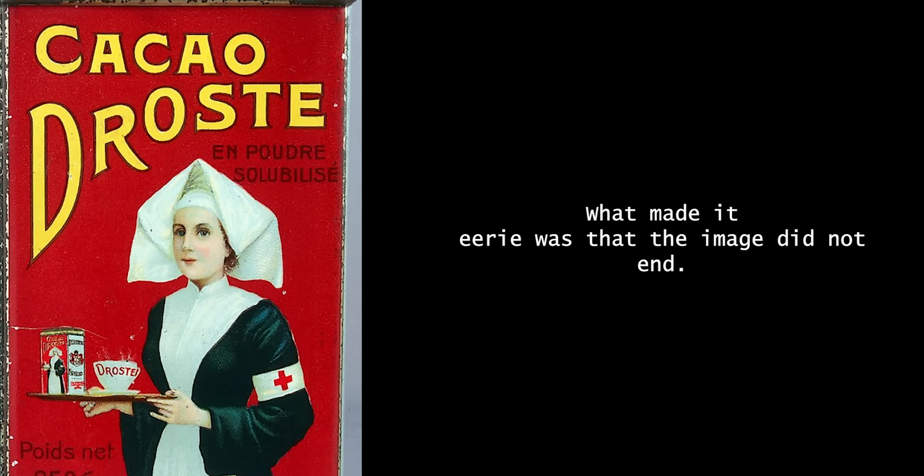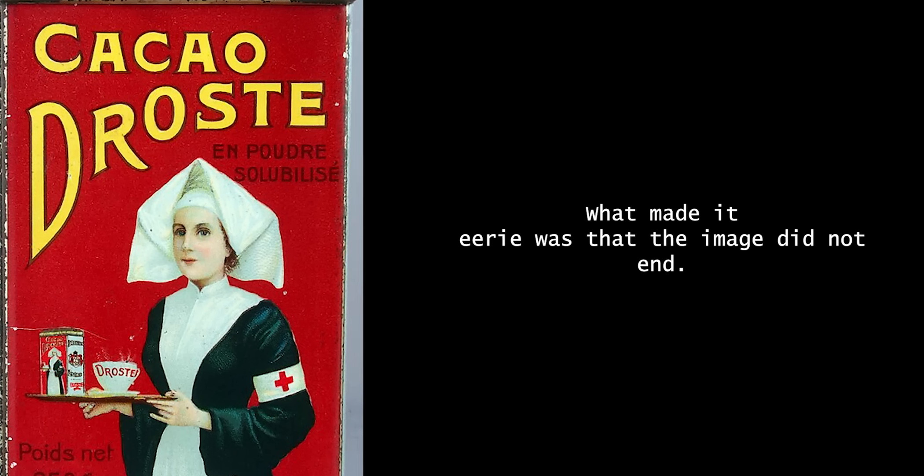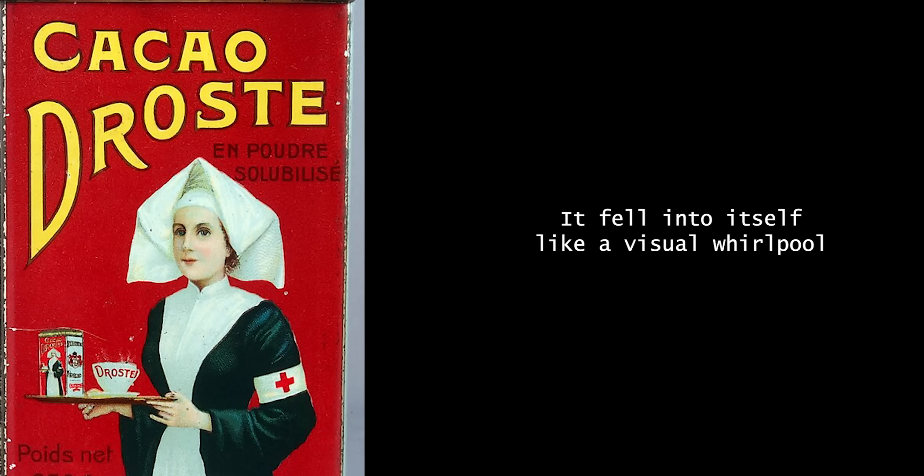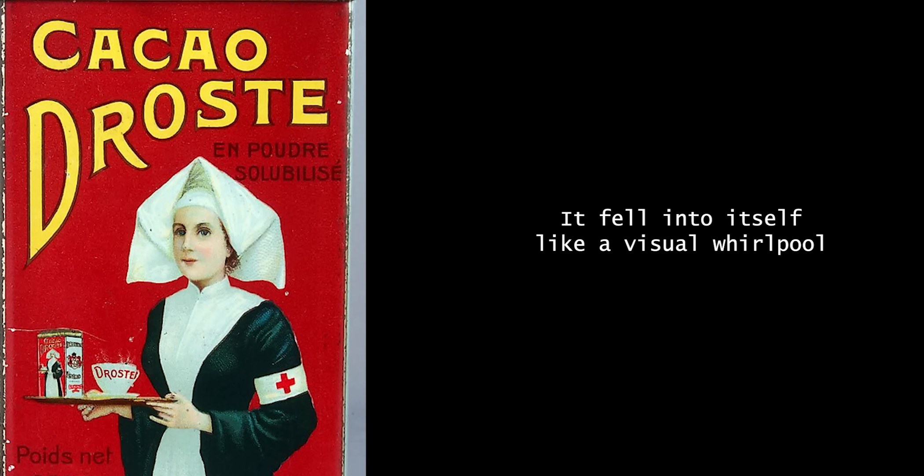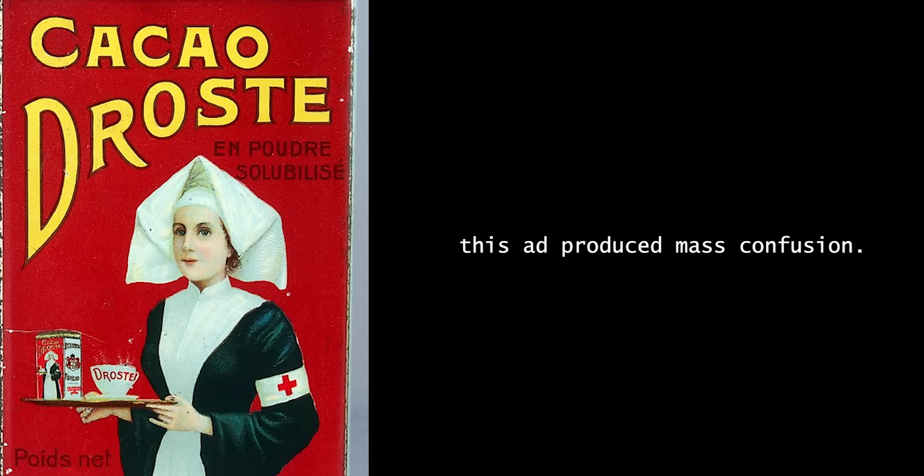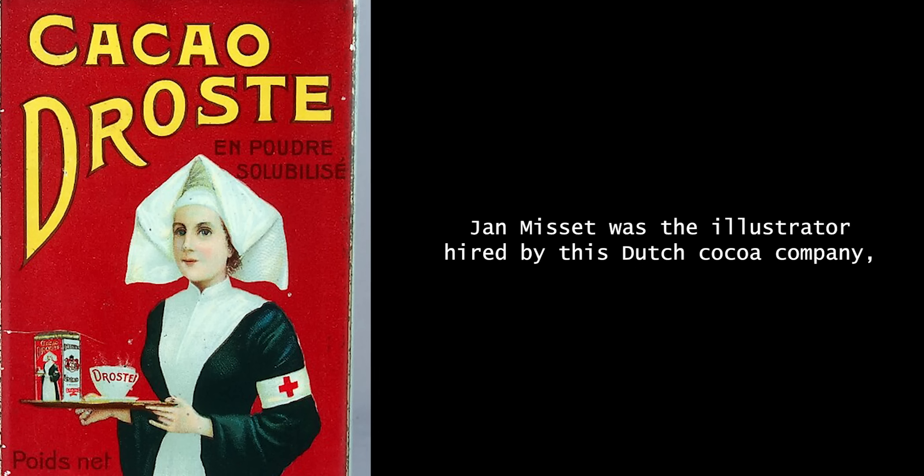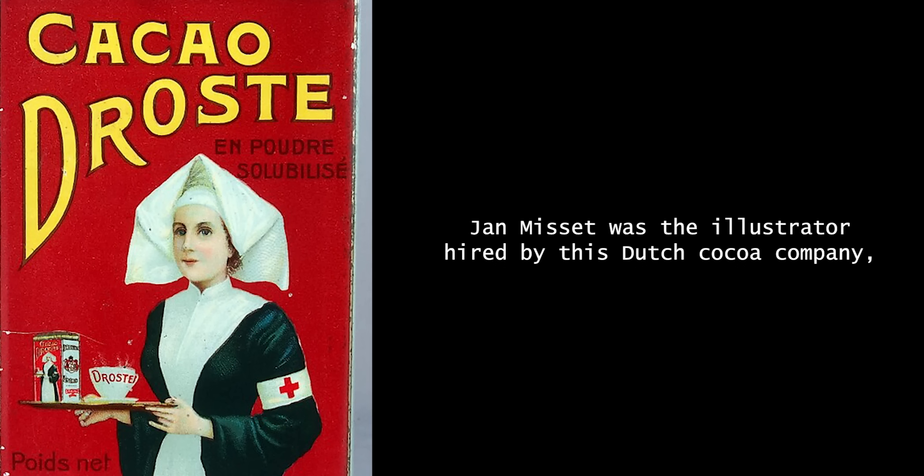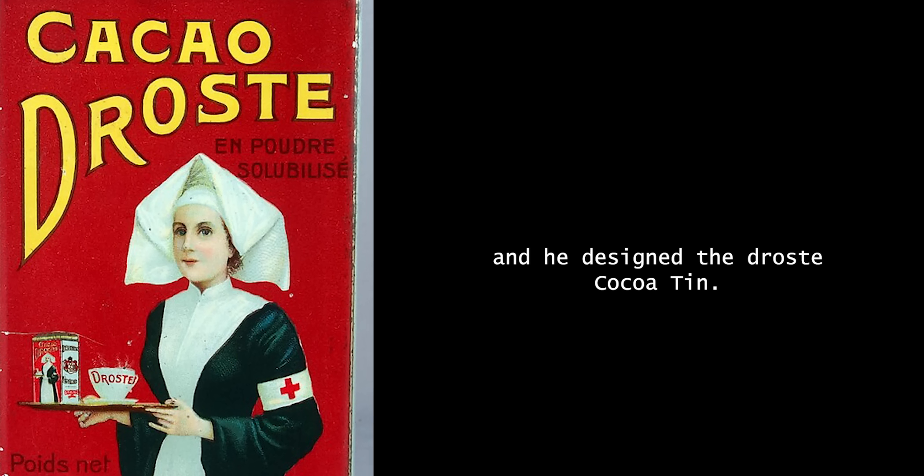What made it eerie was that the image did not end. It fell into itself, like a visual whirlpool. In the pre-AI and Photoshop era, this ad produced mass confusion. Jan Misset was the illustrator hired by this Dutch cocoa company, and he designed the Droste cocoa tin.